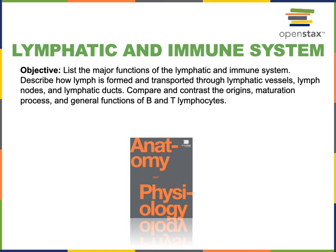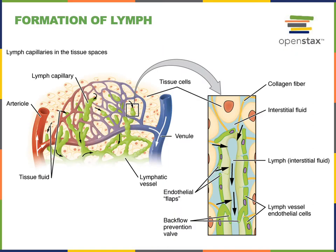The major functions of the lymphatic system include maintaining blood volume by transporting liquid that leaks out of blood capillaries in the process of filtration. That liquid becomes interstitial fluid, which is transported by the lymphatic system back to the blood. Interstitial fluid drains into lymphatic capillaries that have endothelial flaps functioning as one-way valves to prevent backward flow, keeping lymph moving into larger vessels and eventually into lymphatic ducts that drain lymph into the blood at the subclavian veins.